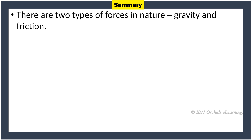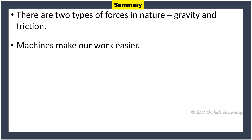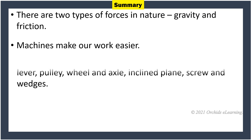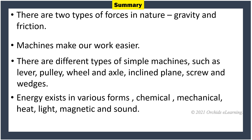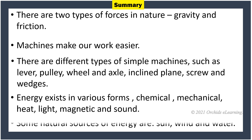Summary: There are two types of forces in nature — gravity and friction. Machines make our work easier. There are different types of simple machines, such as a lever, pulley, wheel and axle, inclined plane, screw, and wedge. Energy exists in various forms: chemical, mechanical, heat, light, magnetic, and sound. Some natural sources of energy are the sun, wind, and water.